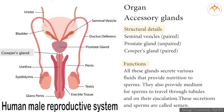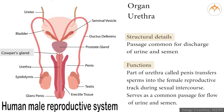Accessory glands include seminal vesicles (paired), prostate gland (unpaired), and Cowper's gland (paired). All these glands secrete various fluids that provide nutrition to sperms and also provide a medium for sperms to travel through tubules and on their ejaculation. These secretions and sperms together are called semen. The urethra serves as a common passage for discharge of urine and semen. The part of the urethra called the penis transfers sperms into the female reproductive tract during sexual intercourse.